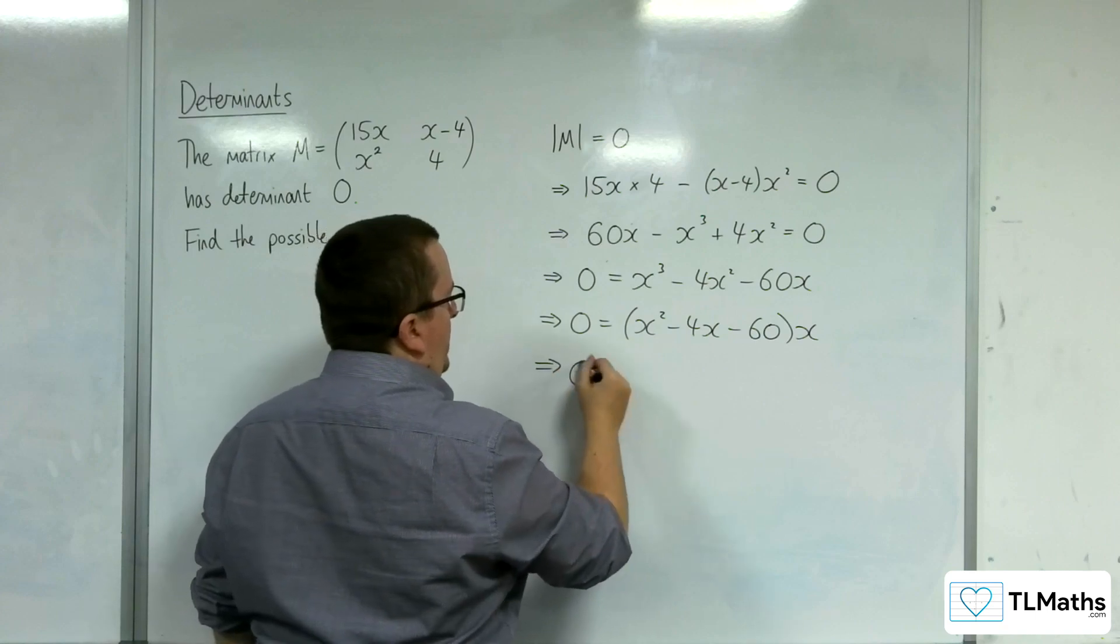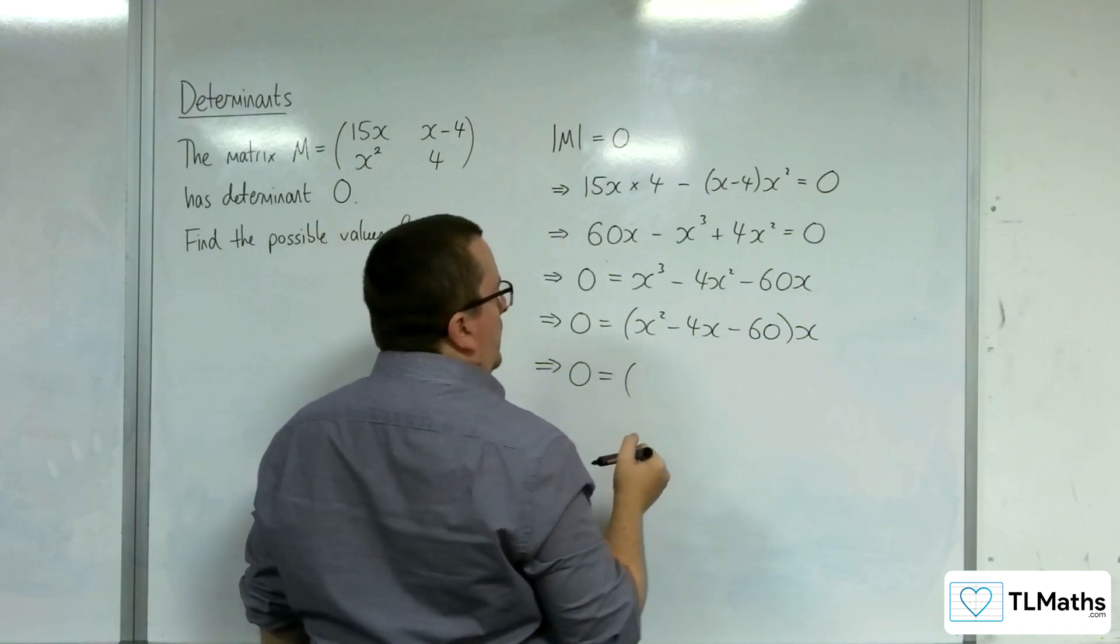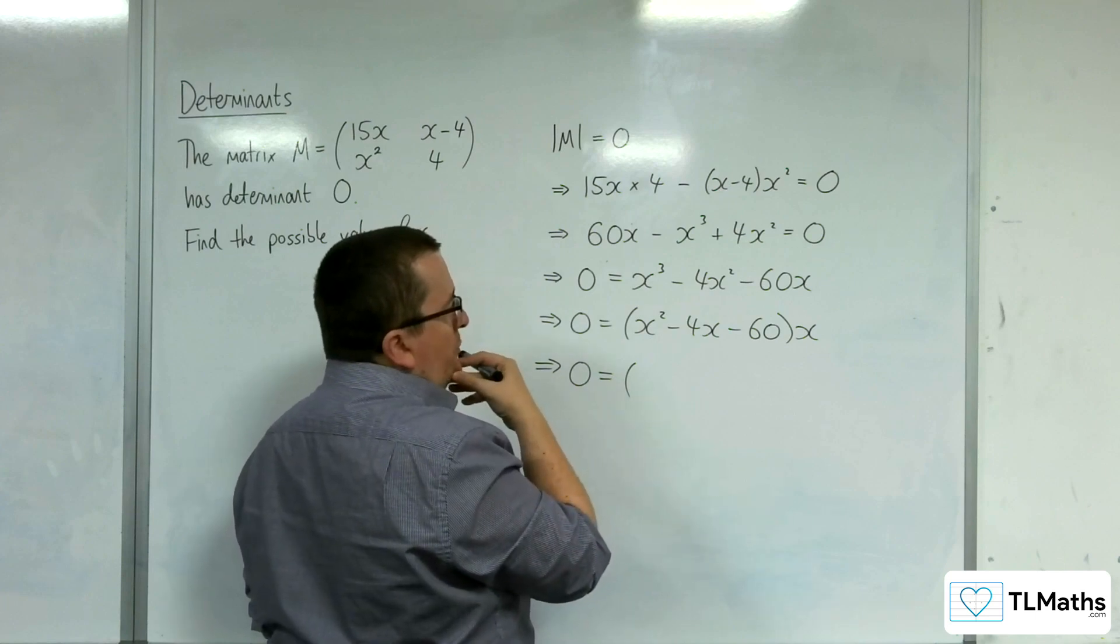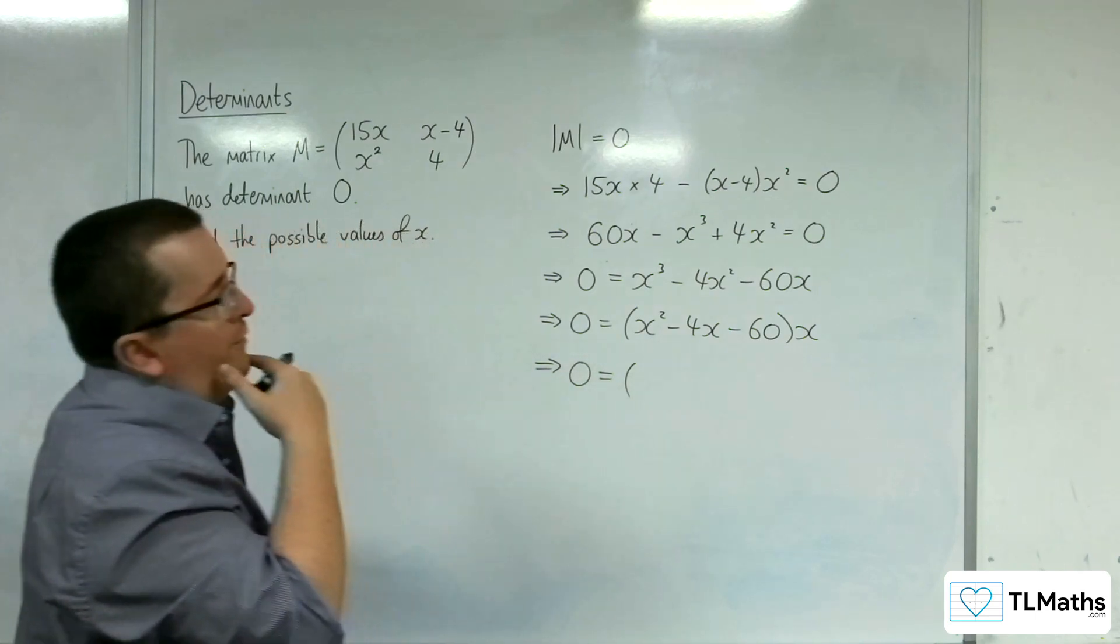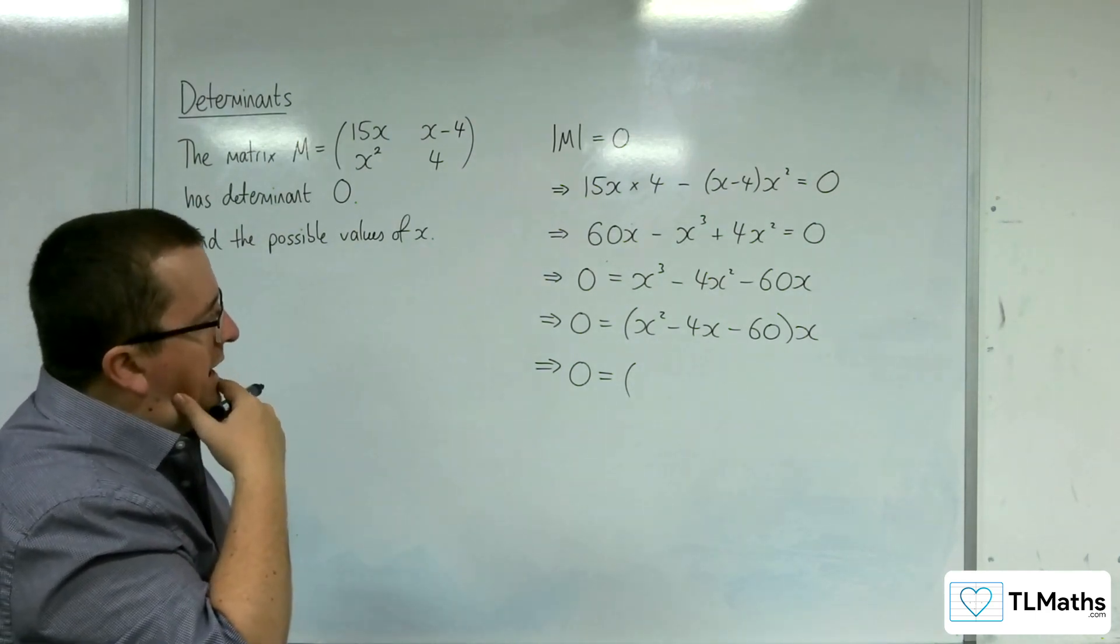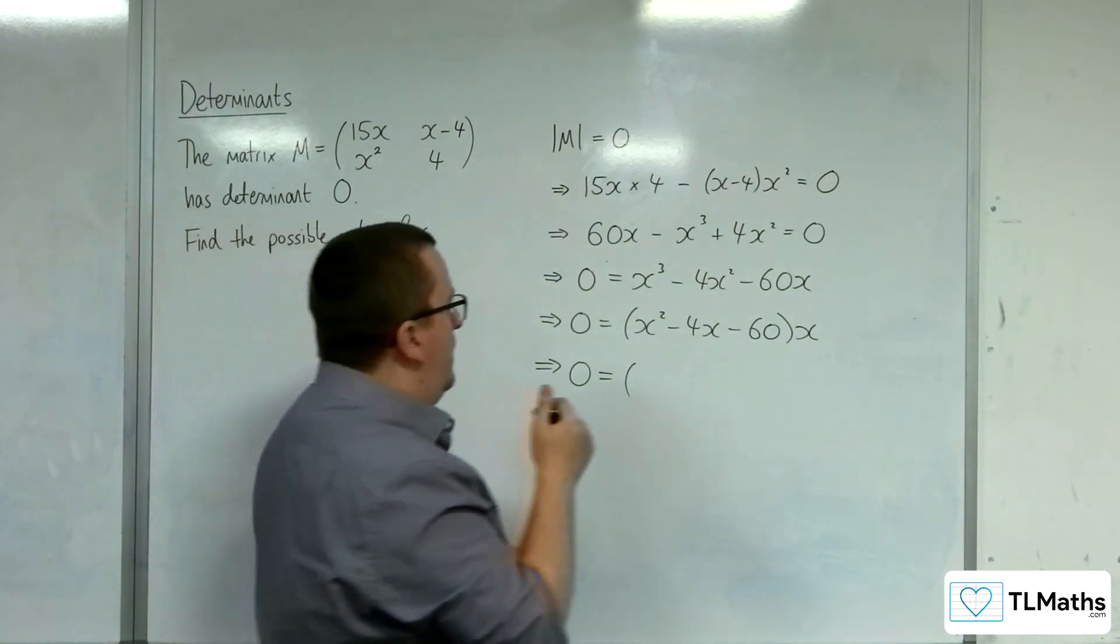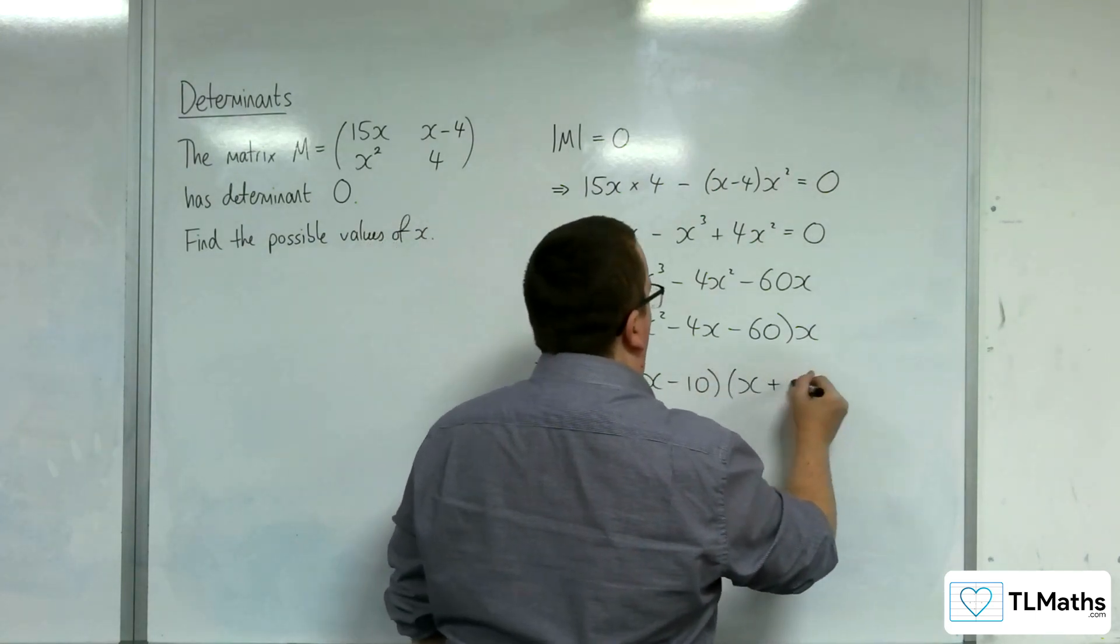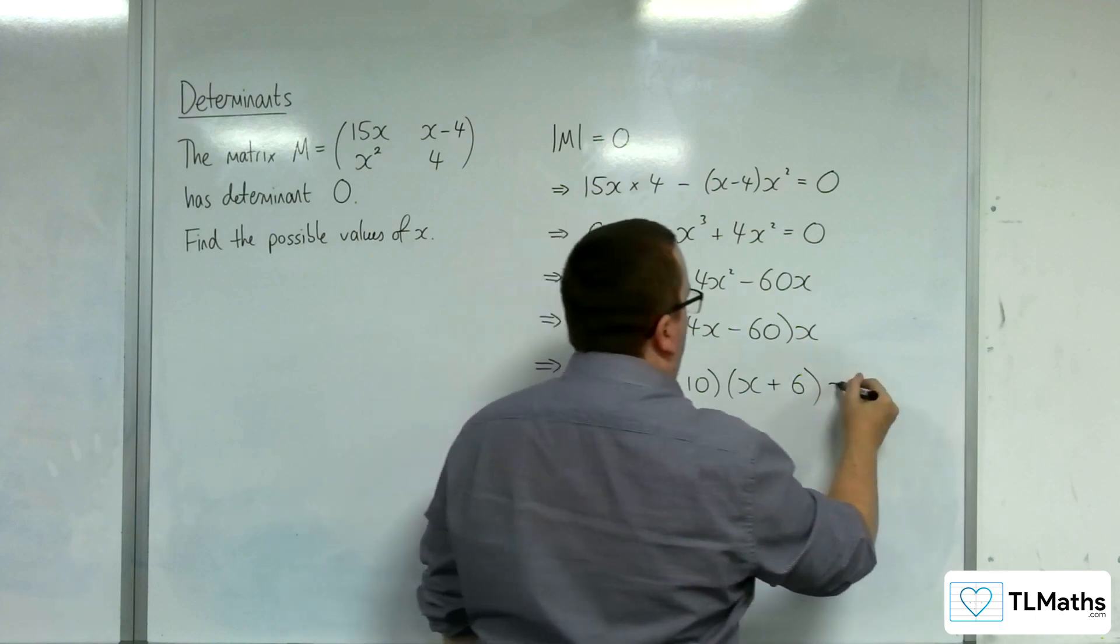Now that can be factorized. So what would we need? So 12, not 12 and 5, 6 and 10, that'll do it. So x take away 10, x plus 6 times x.